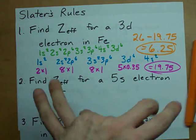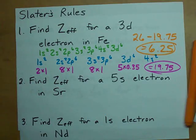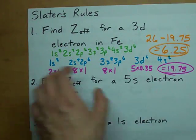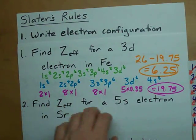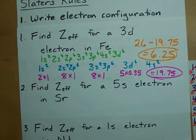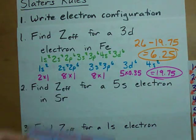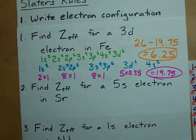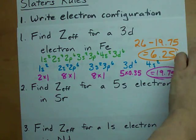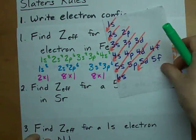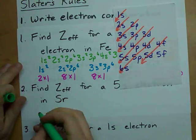Okay, let's do this again for a 5s in strontium. Step 1, write an electron configuration. Well, strontium is element number 38. So, I need 38 electrons, and I need my order of filling.